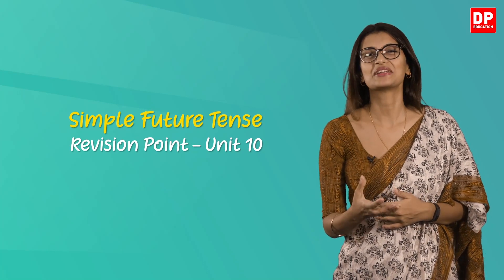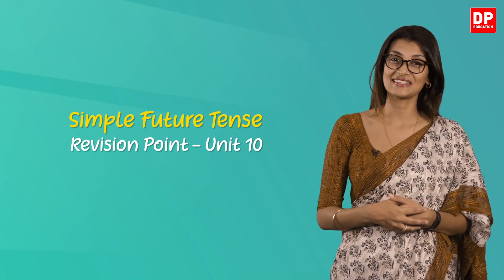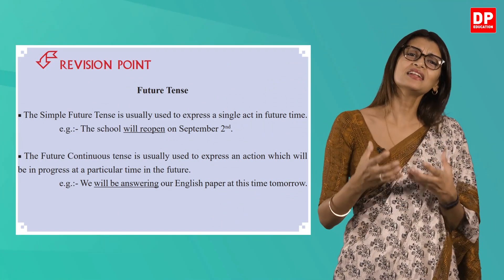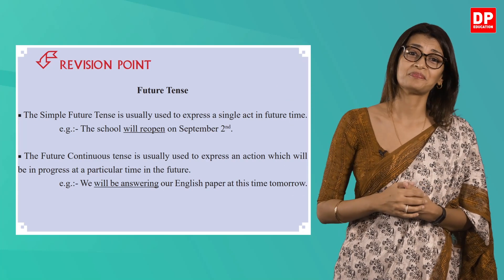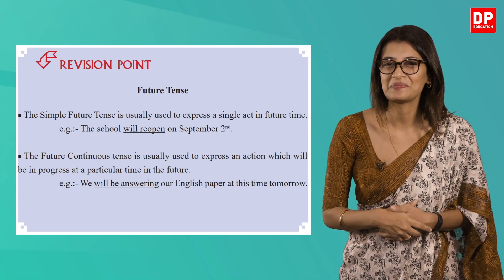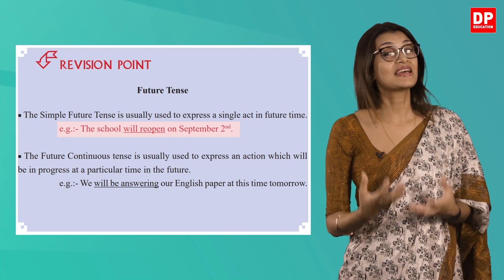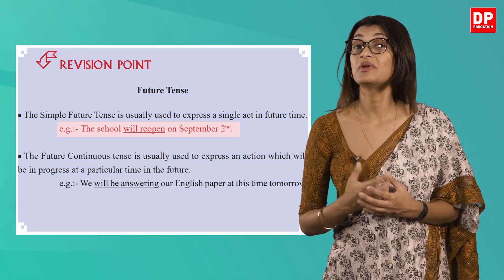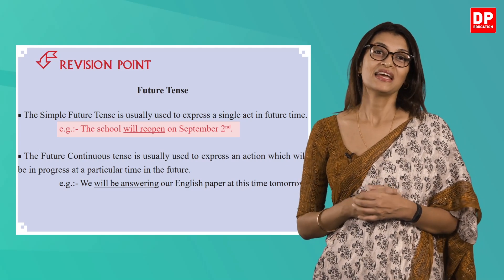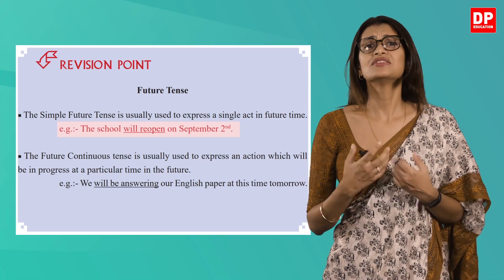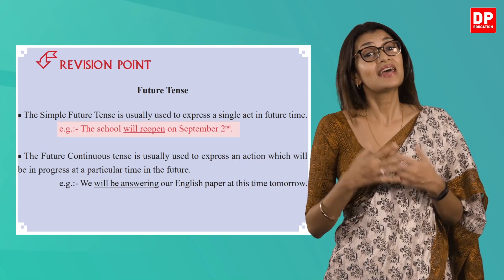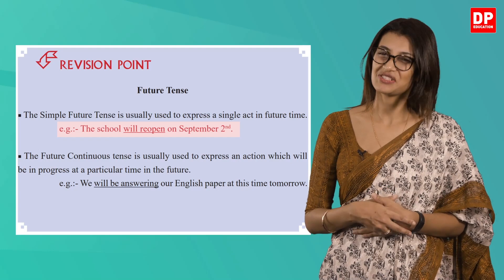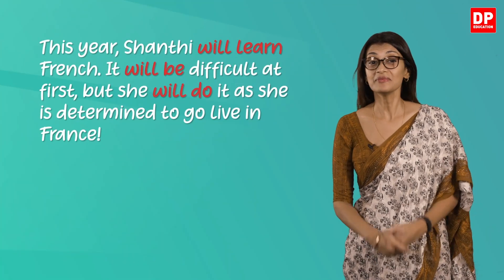Let's look at what is said about the future tense. The simple future tense is usually used to express a single act in the future time. They have given an example: 'The school will reopen on the second of September.' As you can see, 'will reopen' is underlined. The simple future is a verb tense that's used to talk about things that haven't happened yet.